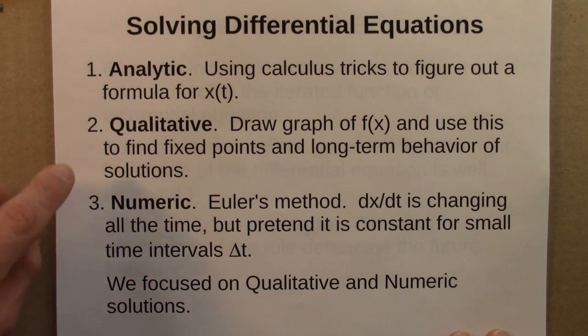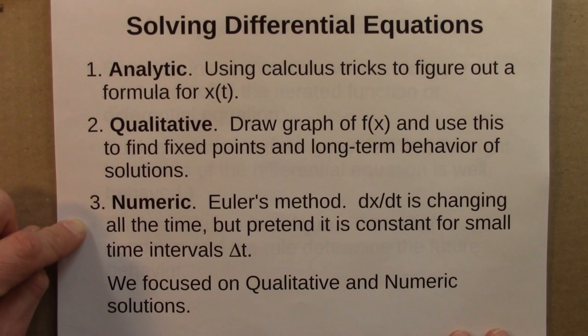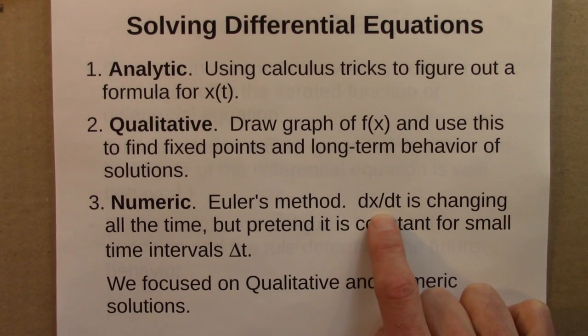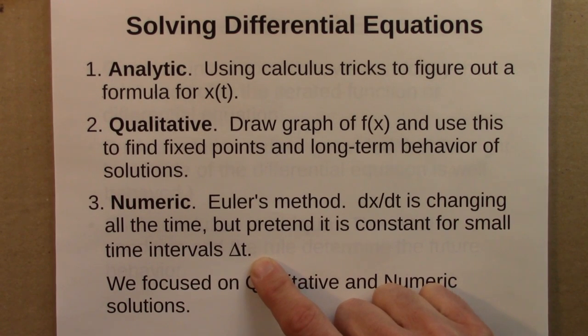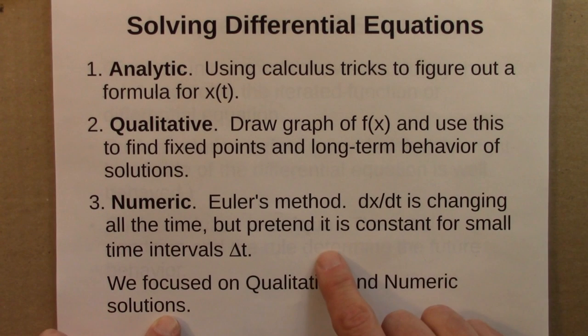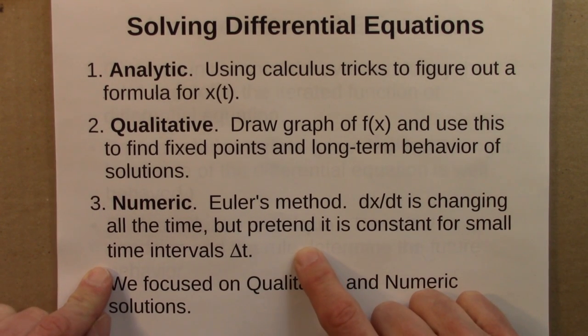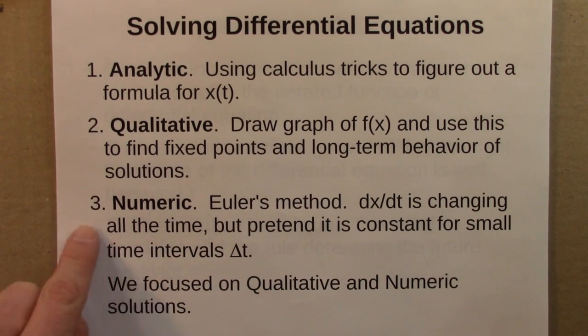The other way we thought about solving differential equations was numerical or computational or algorithmic. The main example there was Euler's method. What makes a differential equation hard is that the derivative is changing all the time. So we can't just use distance equals rate times time. However, we just pretend that it's constant for small intervals delta T, and use that to sort of step forward in time, time interval by time interval, and that gives us the function X of T. A tiny bit tedious, but the sort of thing that computers excel at. They're very good at doing simple-minded calculations again and again. We focused on qualitative and numeric solutions in this course.